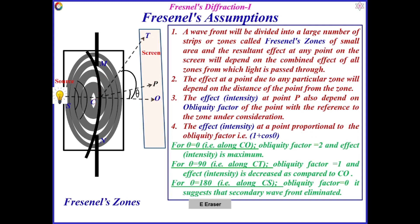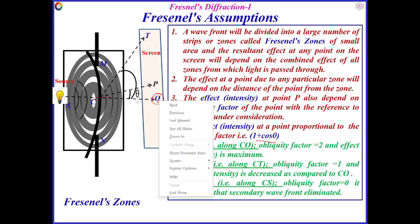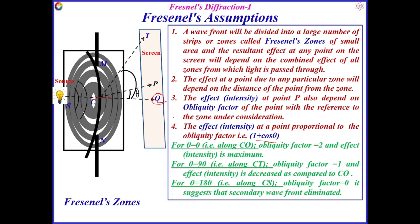Due to the first half-period zone, what will be the effect at O? First we have to calculate the obliquity factor, which is 1 plus cos theta. When light passes through the first half-period zone it moves straight to O, so theta will be equal to zero. Cos theta will be 1, so the obliquity factor equals 2. Therefore the effect or intensity will be maximum along the C-O path.